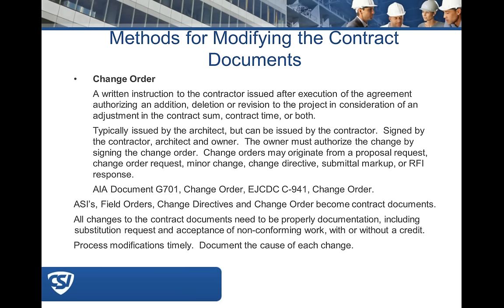Kevin notes that the AIA and EJCDC change order documents are very similar. He also offers a distinction: when a product is equivalent as determined by the AE, it's an 'or equal'; when it's not, it's a substitution. How those terms are defined in your front-end documents matters. In our documents, if it's not a specified product or manufacturer, it's a substitution by definition.